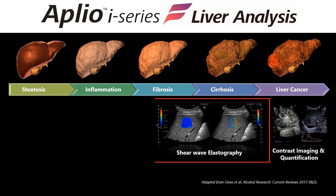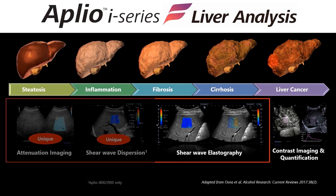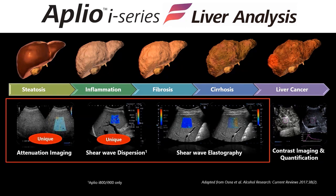For liver fibrosis or cirrhosis, shear wave elastography can be a useful non-invasive tool for accurate and reproducible assessment of fibrosis in patients with liver disease. But for the earlier stages, particularly steatosis and inflammation, ultrasound has lacked diagnostic capabilities for quantitative assessment. That's where Canon's unique suite of liver analysis tools — including not just shear wave elastography, but shear wave dispersion and attenuation imaging — can be used as an aid in the diagnosis and monitoring of patients with NAFLD and NASH.